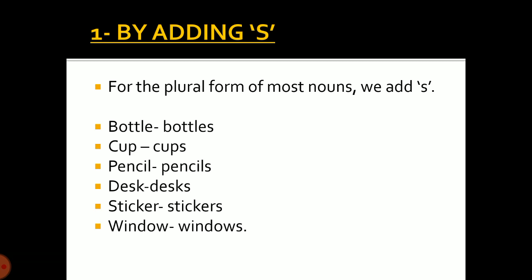The first rule is by adding the suffix s to the singular noun. For the plural form of most nouns, we add s. For example: the plural of bottle is bottles, the plural of cup is cups, the plural of pencil is pencils, the plural of desk is desks, the plural of sticker is stickers, and the plural of window is windows.